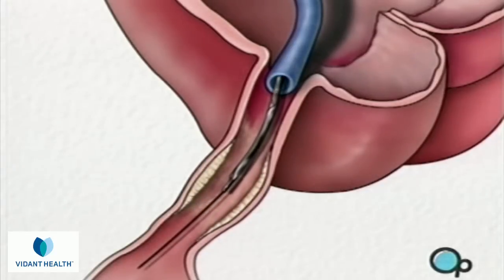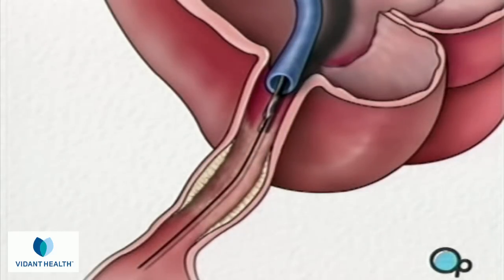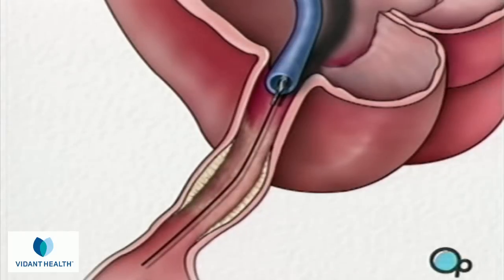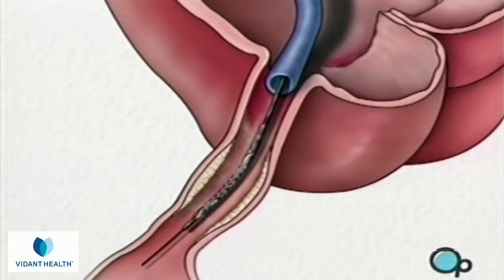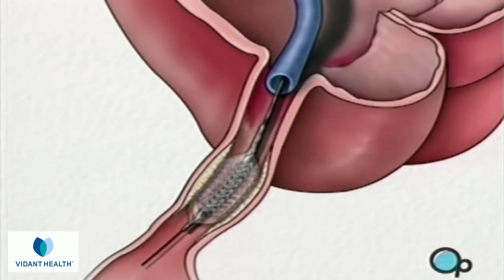The balloon catheter is then withdrawn and another balloon catheter is inserted. This balloon has the mesh stent tube wrapped around it. Once this tube has been placed in the center of the now widened area of the artery, the balloon is briefly inflated. The stent expands until it hugs the walls of the artery.